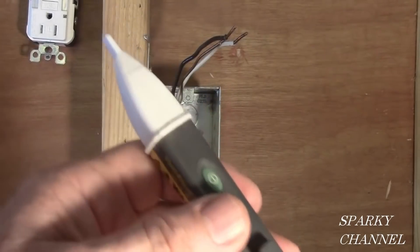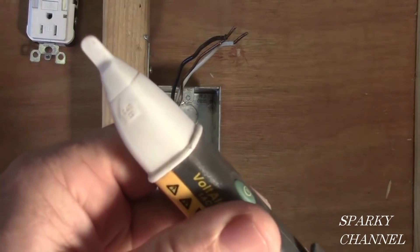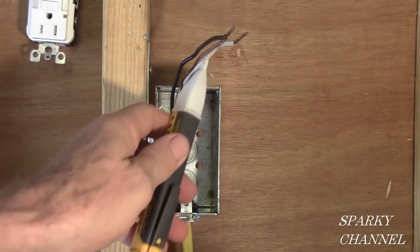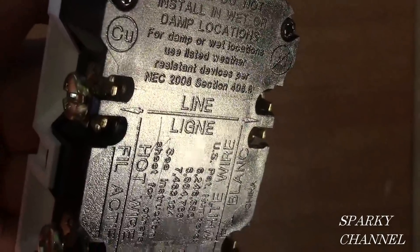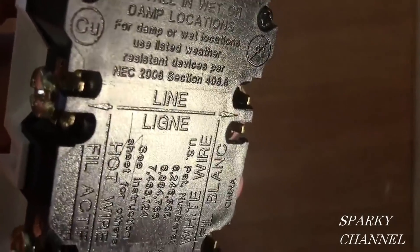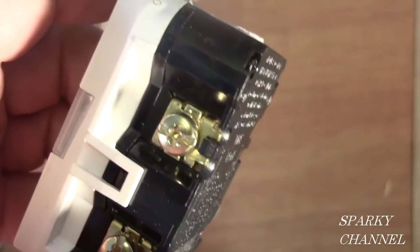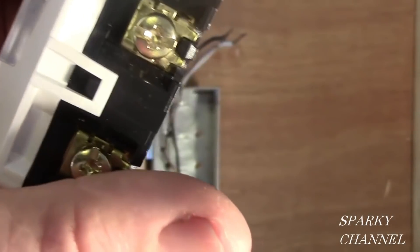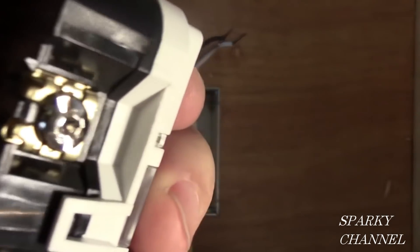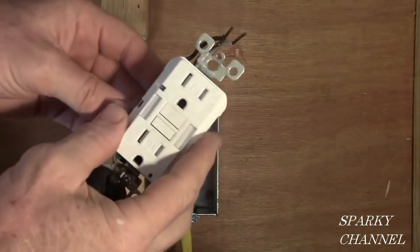Even though I've turned the circuit breaker off, I'm going to use my Fluke voltage detector to double check and make sure the electricity is off. Now I'm going to hook the hot black wire and the neutral wire to the line of the ground fault circuit interrupter. The black wire is going to go to this bronze screw and the white wire is going to go to the silver screw. Remember, we've double checked to make sure the electricity is off.